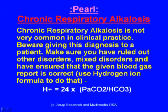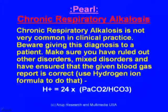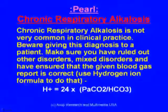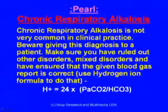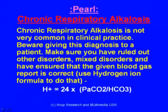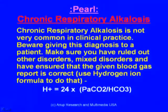Chronic respiratory alkalosis is not very common in clinical practice. Be cautious before giving this diagnosis — make sure you have ruled out other disorders and mixed disorders, and have ensured that the blood gas test report is correct. To verify this, use the hydrogen ion formula. More details on this formula and how hydrogen ion corresponds to pH can be found in the book.